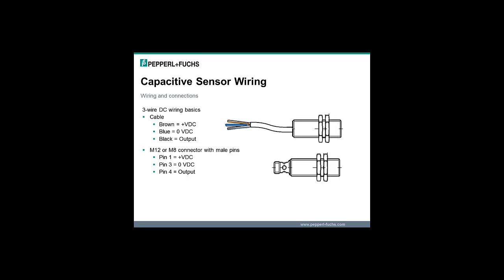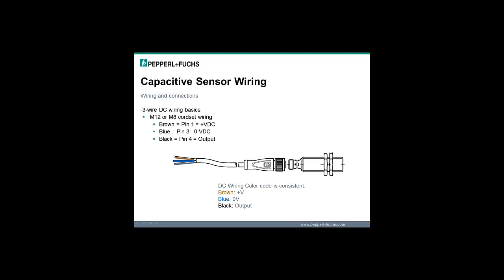For sensors with integral M12 or M8 connectors, the 3-wire DC capacitive sensor wiring is defined as pin number 1 plus voltage connection, pin number 3 power supply common or zero volt connection, pin number 1 and pin number 4 output connection. Conveniently, the wiring color code extends to the external cable connections when using a cord set with a sensor that has an integral connector. Here you can see that when using a 3-wire or 4-wire cord set, the wiring colors that you connect to use the sensor are the same: brown, blue and black.